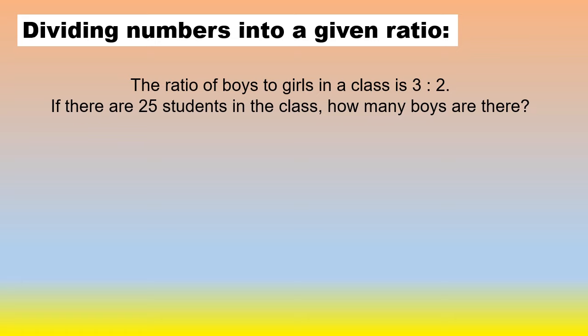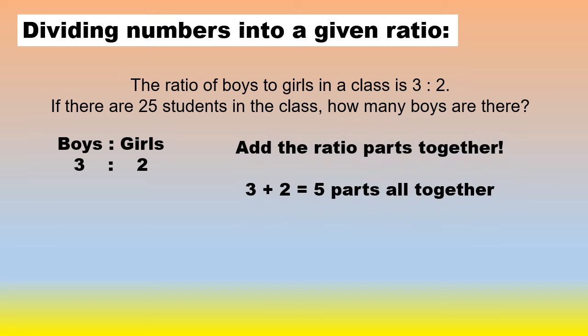First things first, write up your ratio: boys to girls is 3 to 2. Then calculate the total number of parts you are dealing with. 3 parts boys and 2 parts girls, so 3 plus 2 is 5 parts all together. To work out the boys, you say the boys are 3 out of 5 of the 25. So 3 divided by 5 times 25 gives you 15 boys. For the girls, it's 2 out of the 5 of the 25, and that gives you 10 girls.